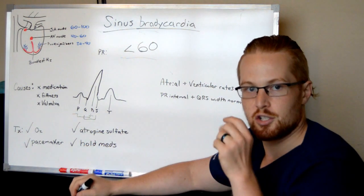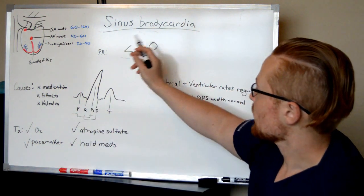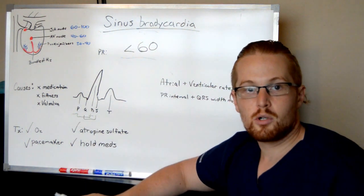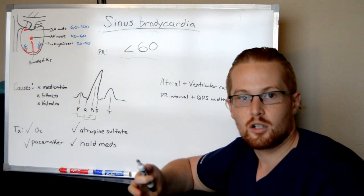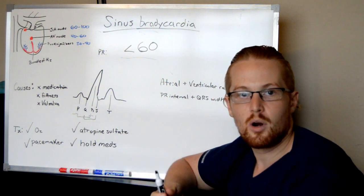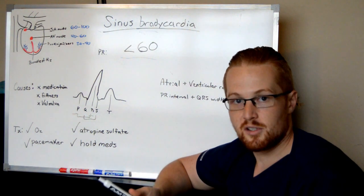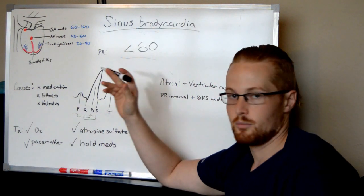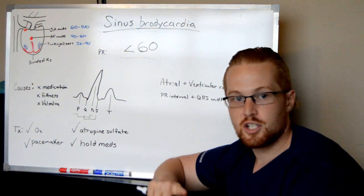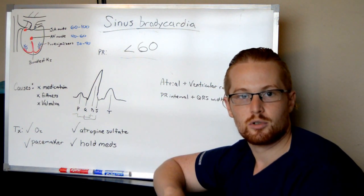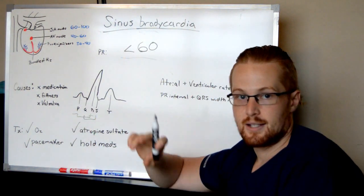Each contraction is going to be consistent — you're not going to have some weak and some strong. As for causes, for some people this is normal. Athletes who have trained their heart and lungs may have sinus bradycardia and be perfectly normal. However, sometimes it is abnormal, such as if a patient has an overdose of medications — for example, if they're taking a beta blocker, these medications can lower the heart rate to less than 60.